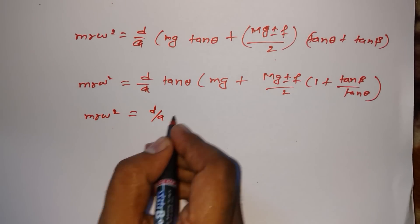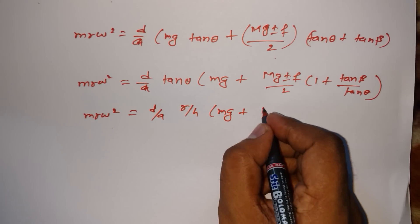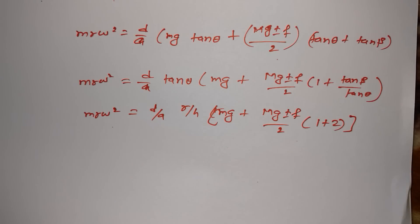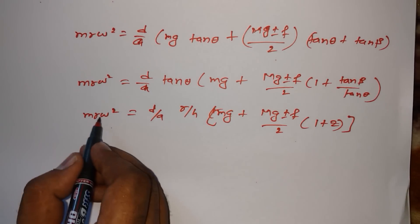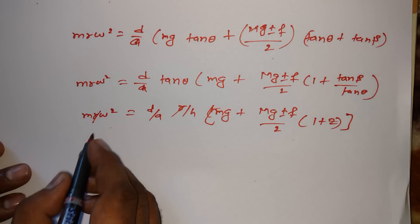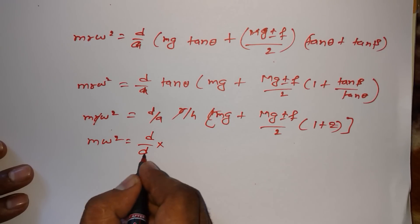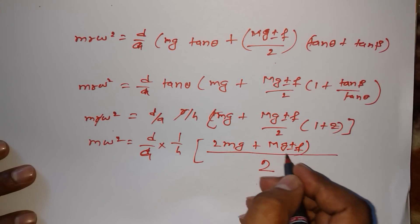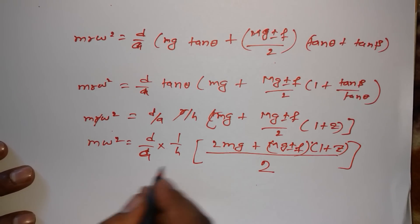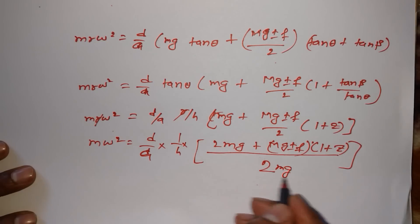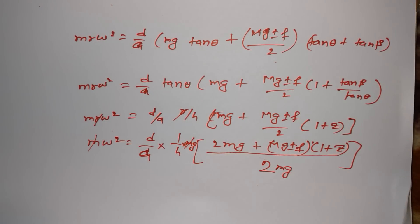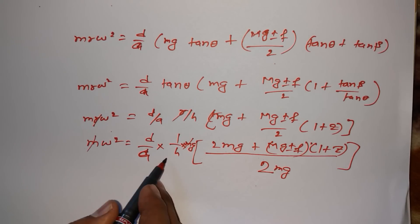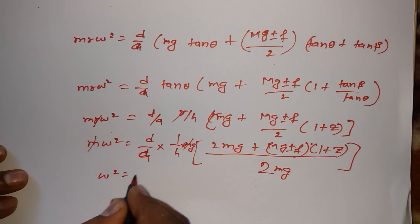Substituting tan theta equals r divided by h into the equation, and letting z equal tan beta divided by tan theta, we get: m times r times omega-squared equals d divided by A times r divided by h, times mg plus mg plus or minus f divided by 2, times (1 plus z). The r cancels from both sides.